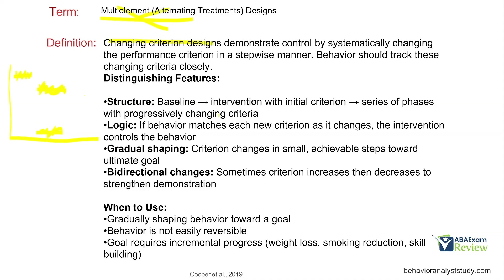You can start with a baseline, then your intervention with an initial criterion, followed by a series of phases with progressively changing criterion. If behavior matches each new criterion as it changes, the intervention more likely controls the behavior. Gradual shaping means criterion changes in small, achievable steps toward the ultimate goal. You want to vary your criterion changes, and the more criterion changes you can make, the stronger the proof.